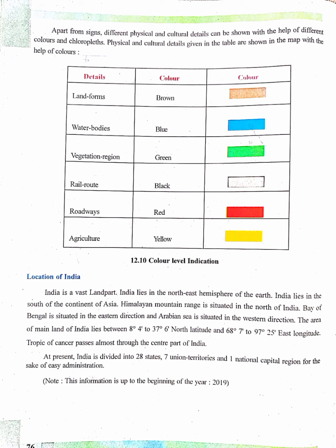India is a vast landmass. India lies in the northeast hemisphere of the earth, in the south of the continent of Asia. The Himalayan mountain range is situated in the north of India. Bay of Bengal is situated in the eastern direction and Arabian Sea in the western direction. The area of mainland India lies between 8 degrees 4 minutes to 37 degrees 6 minutes north latitude and 68 degrees 7 minutes to 97 degrees 25 minutes east longitude.